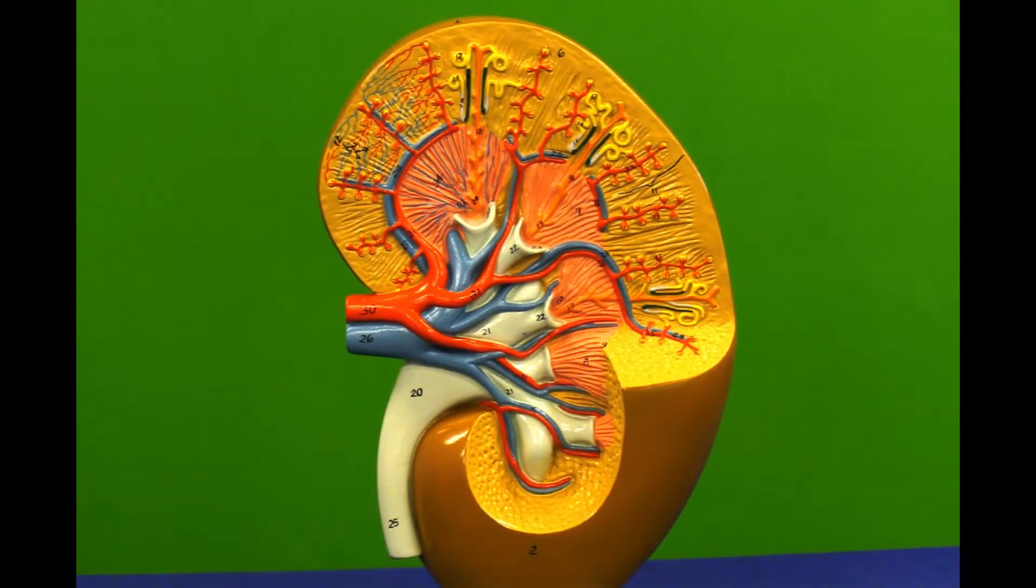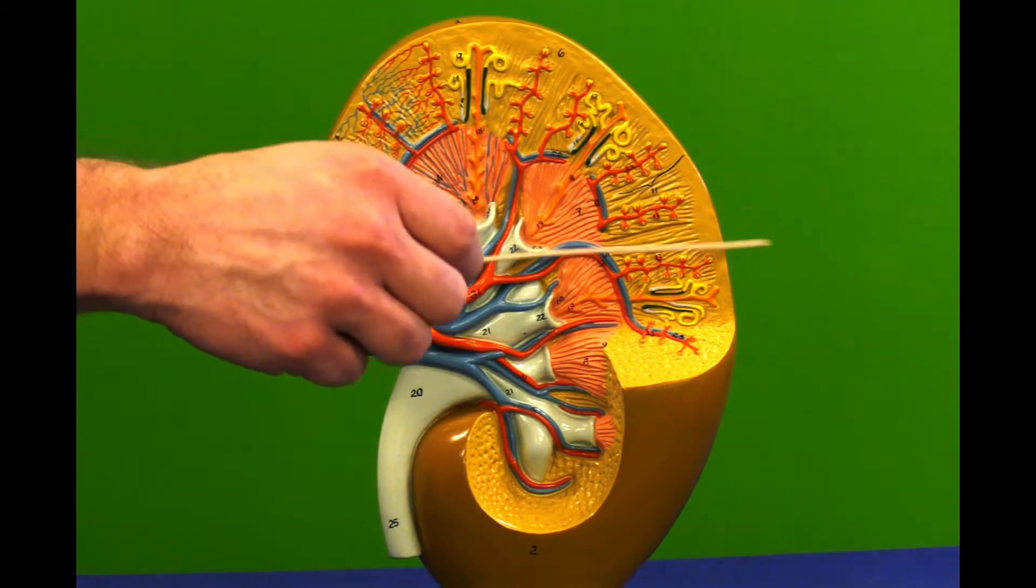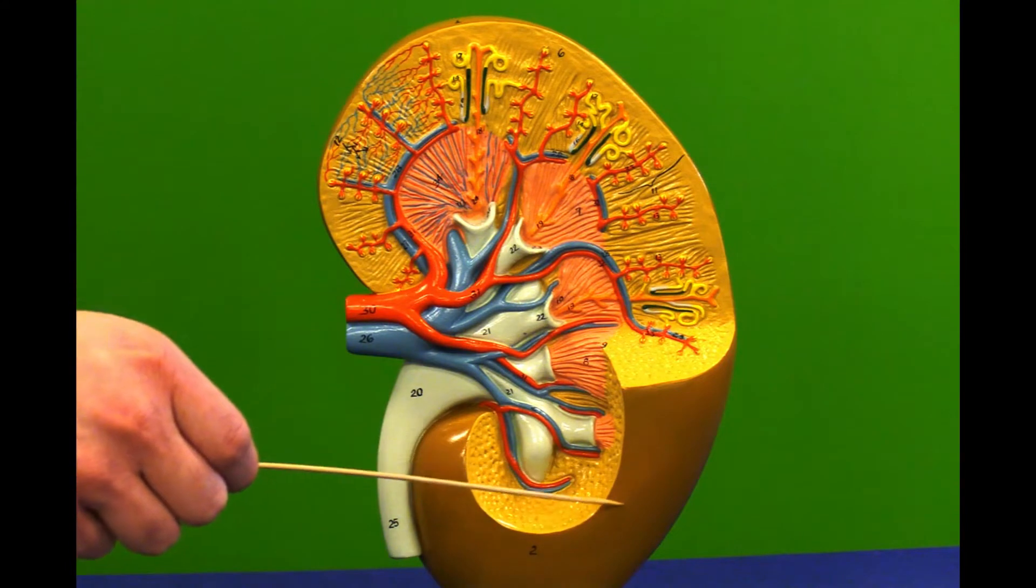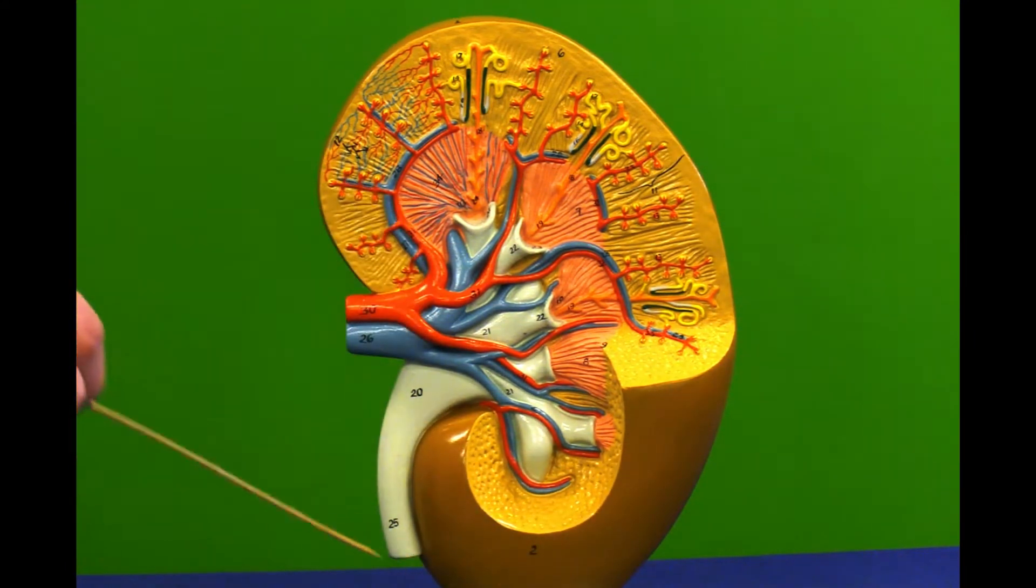Today we are going to look at the kidney. The kidney is covered by a capsule, this dark brown around the entire kidney.